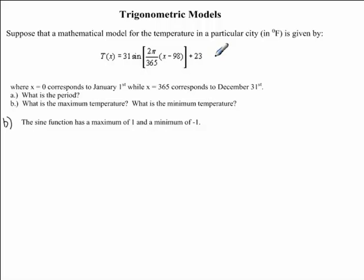Here we have our trigonometric model. If we are finding the maximum temperature, this means that our sine function must be at its maximum value, which we just wrote out. This value is 1. To find the maximum temperature, this is going to equal, we leave the 31. Instead of multiplying by the sine function,